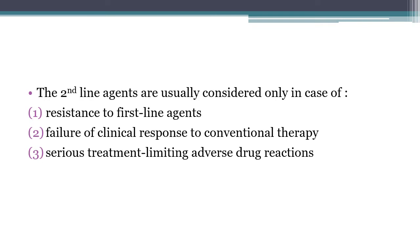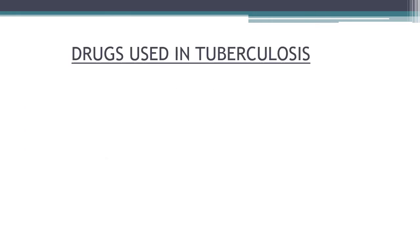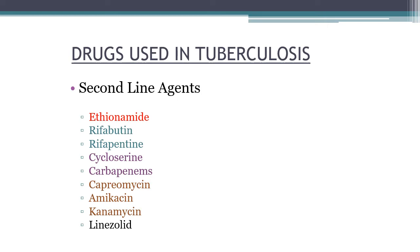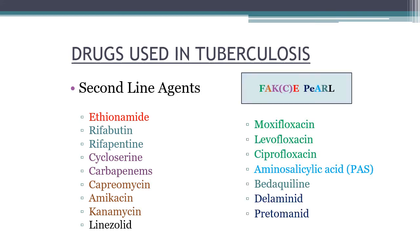Resistance may be to a single drug, or there may be multi-drug resistance or extended drug resistance. Second-line agents are also used when there is failure of clinical response to conventional therapy, or when there are serious treatment-limiting adverse drug reactions — for example, if the patient has developed severe hepatotoxicity or SLE, you stop one of the first-line drugs and add a second-line drug.